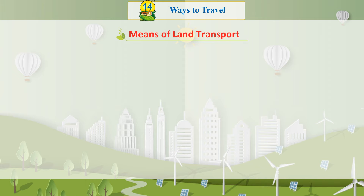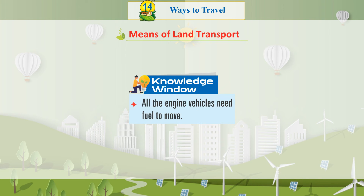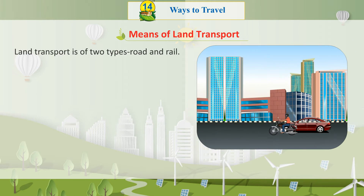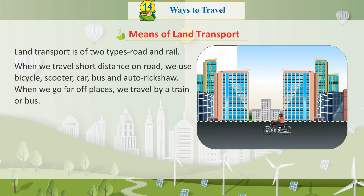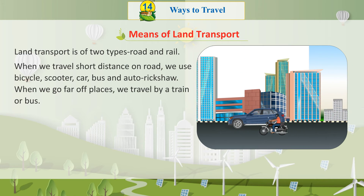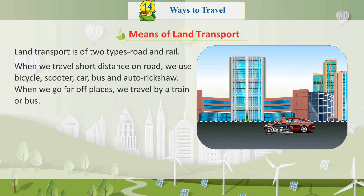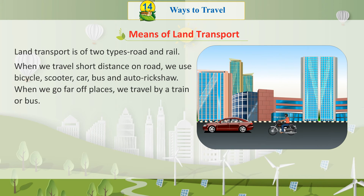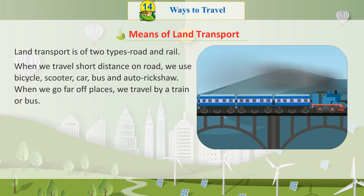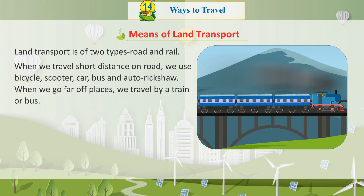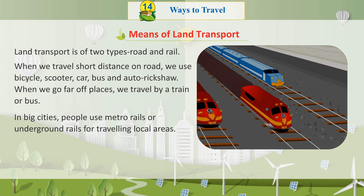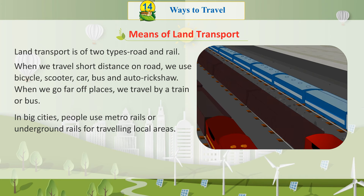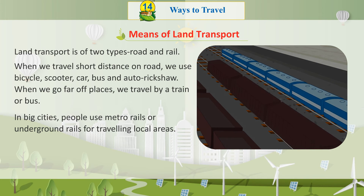Means of land transport. Knowledge Window: All engine vehicles need fuel to move. Land transport is of two types: road and rail. When we travel short distances on road, we use bicycle, scooter, car, bus, and auto rickshaw. When we go to far-off places, we travel by train or bus. In big cities, people use metro rails or underground rails for travelling local areas.